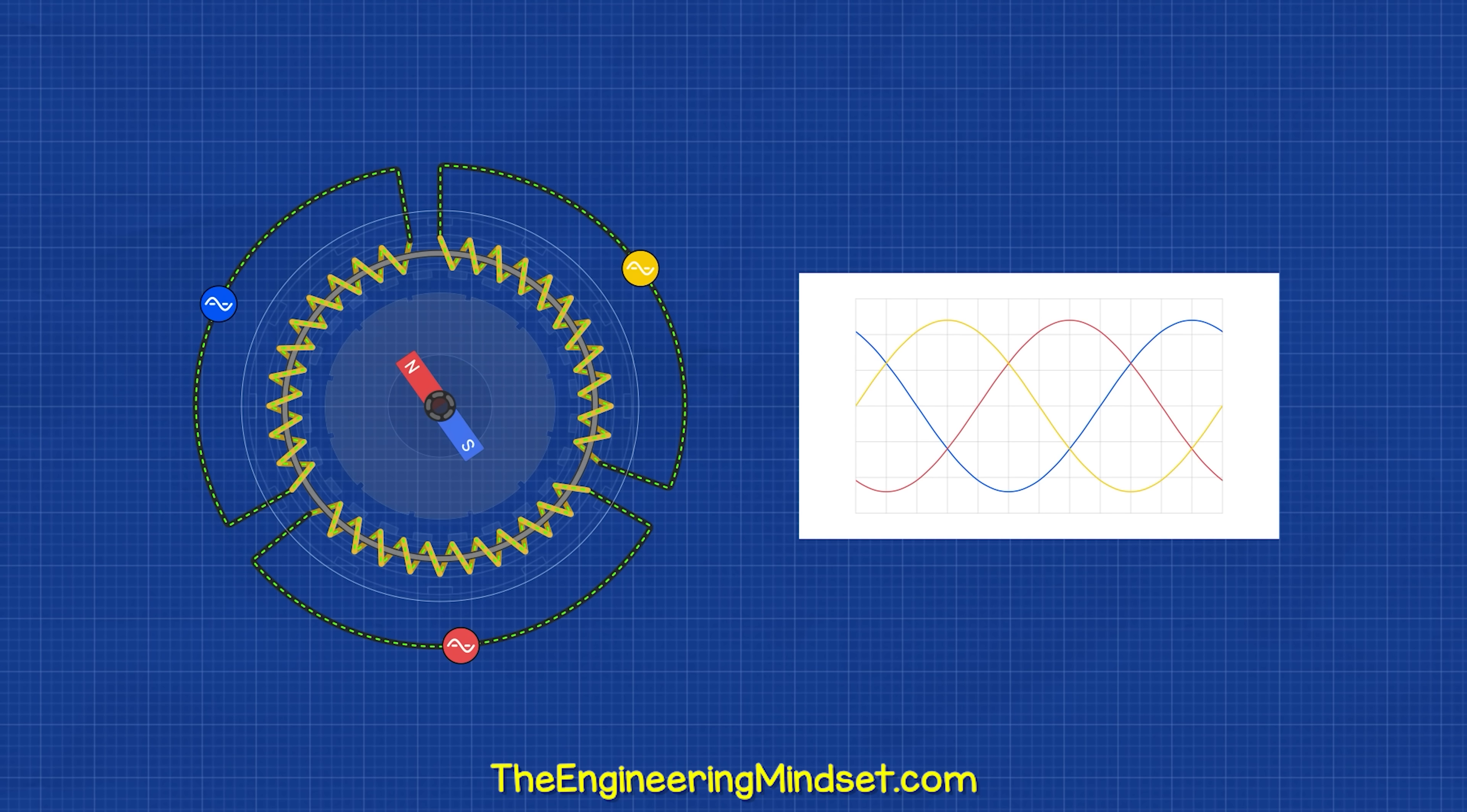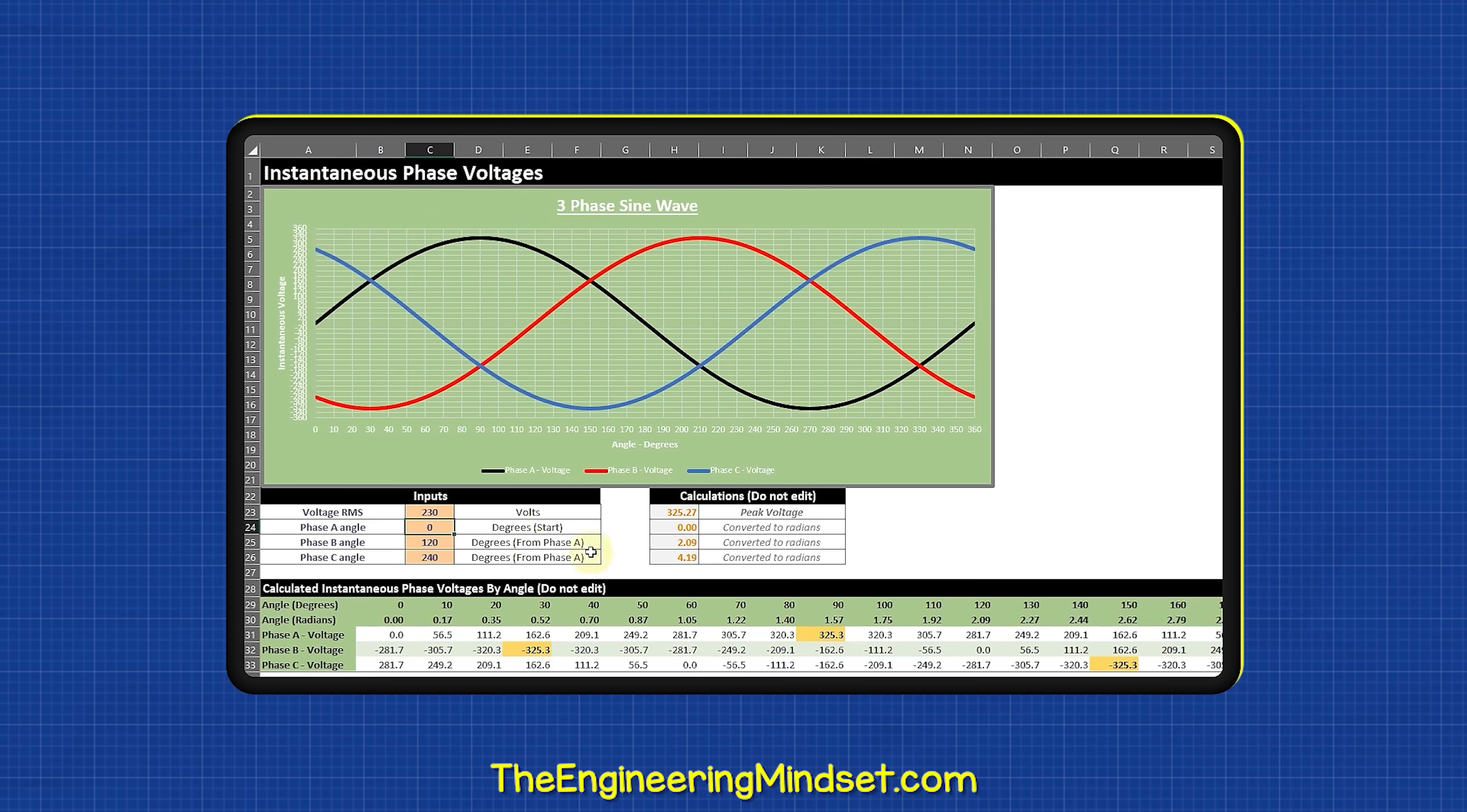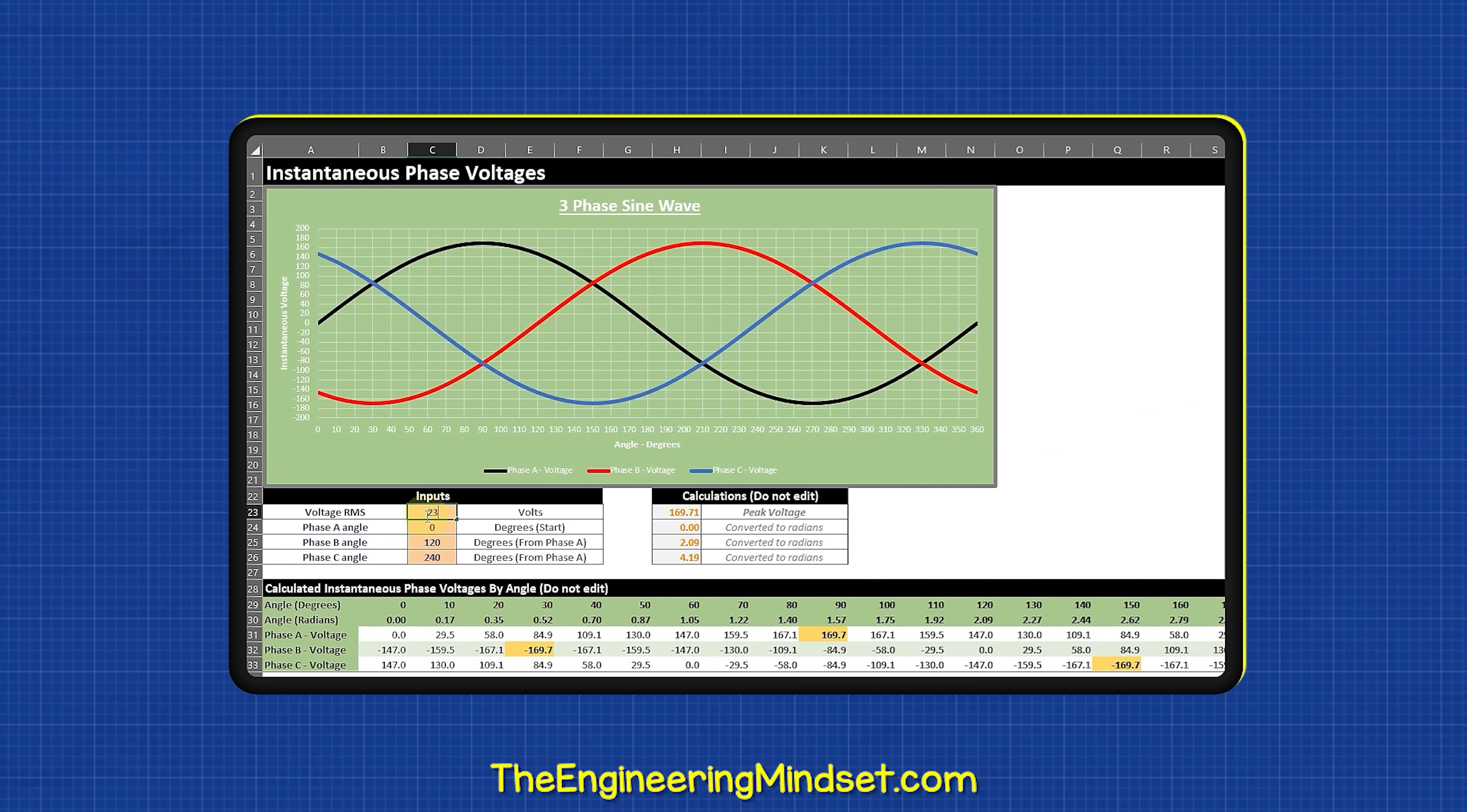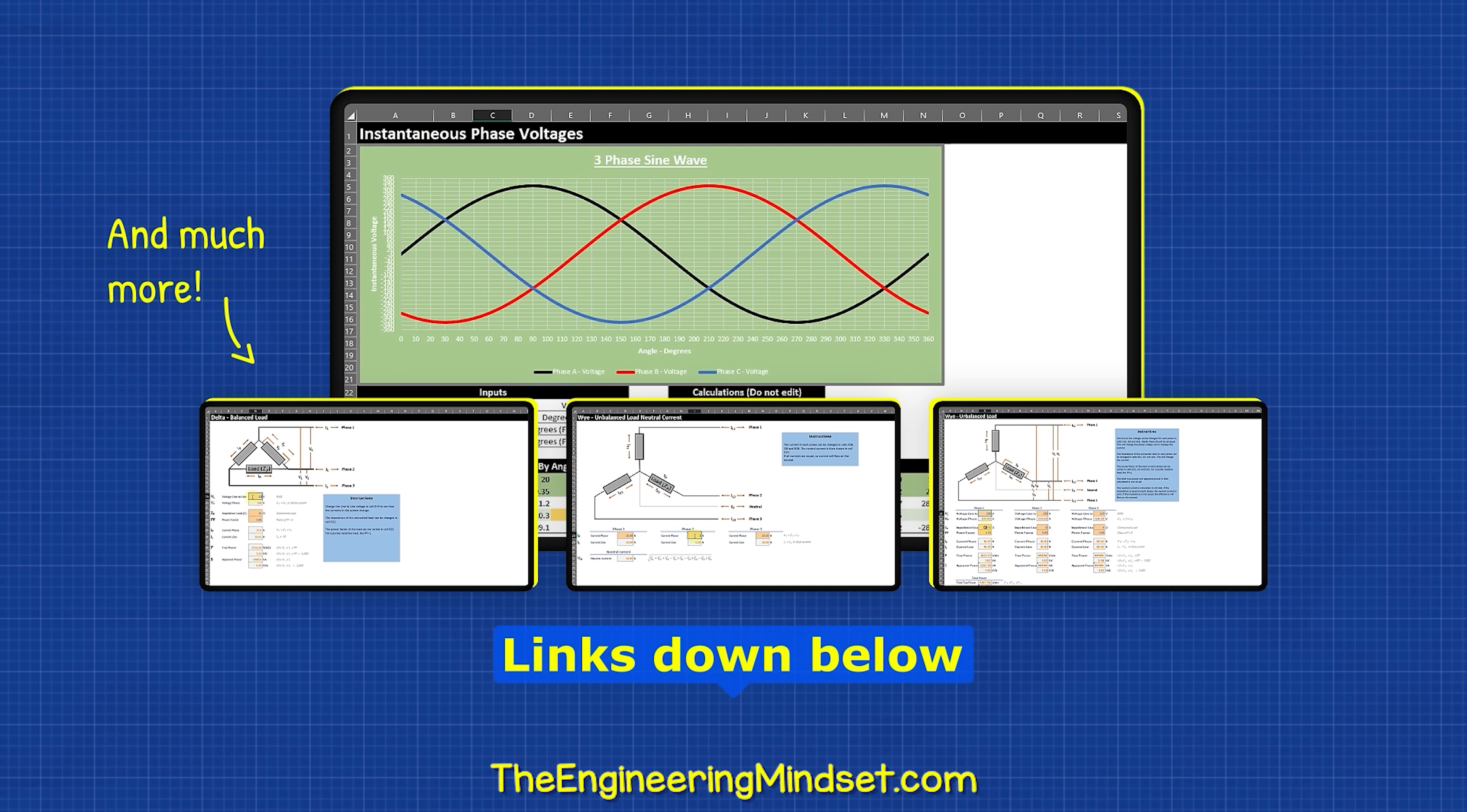The coils in the generator are placed 120 degrees apart simply because that gives us even spacing of the sine waves that are produced. We can move the coil to any angle, but the sine wave will also move and we won't have equal spacing. By the way, you can download my excel sheet and see how the angle changes as well as the instantaneous phase voltages. Links down below for that.